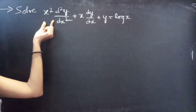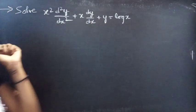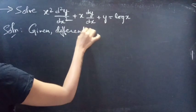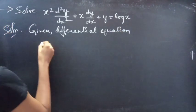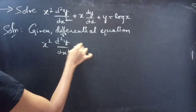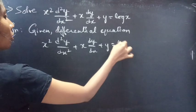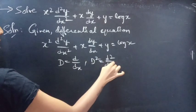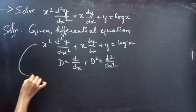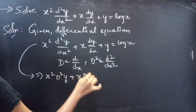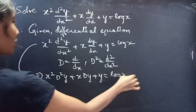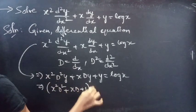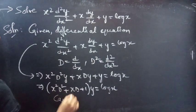Problem: Solve x² (d²y/dx²) + x (dy/dx) + y = log x. Given this differential equation, we can write it as x² d²y + x dy + y = log x. Taking y common from all three terms of the LHS, we get (x² D² + x D + 1) y = log x, which is a Cauchy's equation.